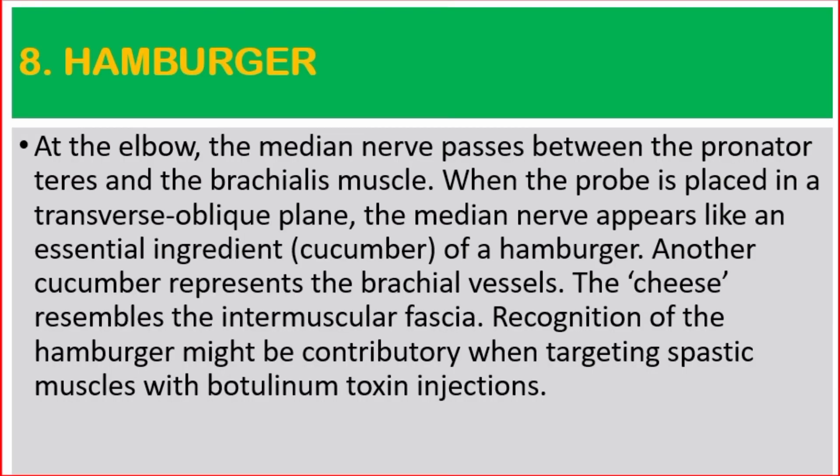Number eight: hamburger. At the elbow, the median nerve passes between the pronator teres and the brachialis muscle. When the probe is placed in a transverse oblique plane, the median nerve appears like an essential ingredient — like a cucumber — of a hamburger. Another cucumber represents the brachial vessels; the cheese resembles the intermuscular fascia. Recognition of the hamburger might be contributory when targeting spastic muscles with botulinum toxin injections.